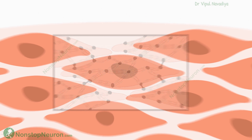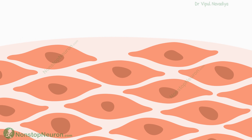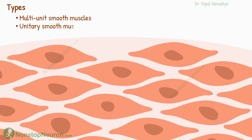Now, depending on whether an individual muscle fiber operates independently or in harmony with all other cells inside the muscle, smooth muscles are broadly divided into two types: multi-unit smooth muscles and unitary smooth muscles.